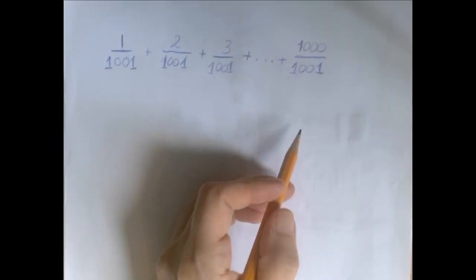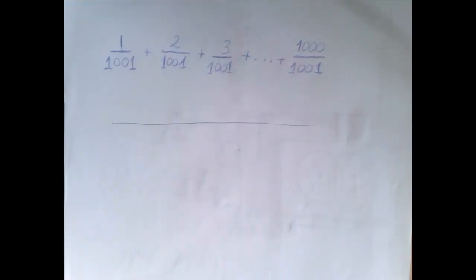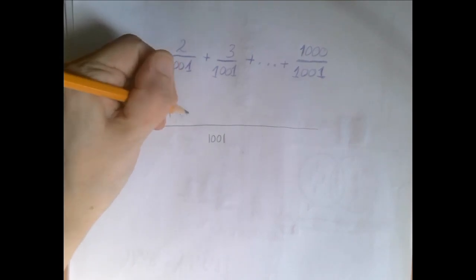So right away we can rewrite this as a single fraction where the denominator is this 1001 and the numerator is the sum 1 plus 2 plus 3 all the way until 1000.